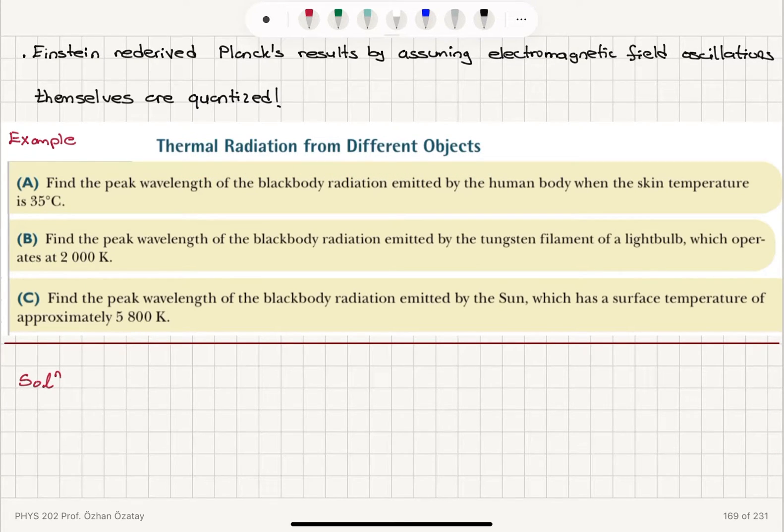We start with the human body. Find the peak wavelength of the blackbody radiation emitted by the human body when the skin temperature is 35 degrees Celsius. We want to know the peak wavelength. Therefore, the easiest thing to do is to use Wien's displacement law.